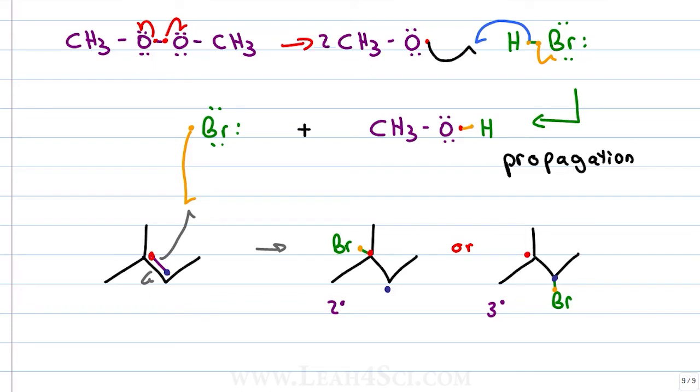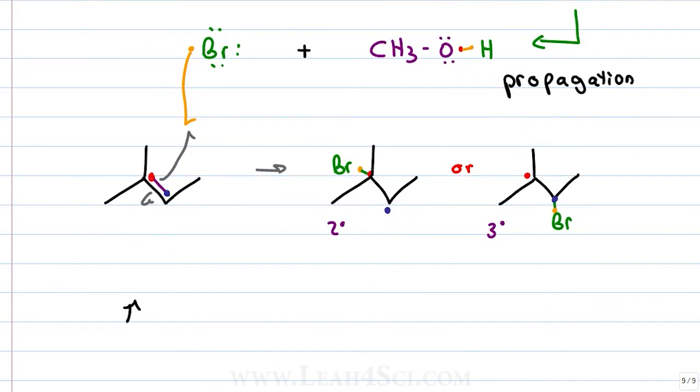If you recall that radical stability is the same as carbocation stability in that the more substituted radical is the more stable radical, you'll see that this is the preferred intermediate because the radical sits on a tertiary carbon having the support of one, two, three other carbon atoms.